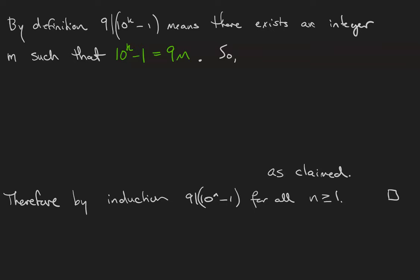So what that means is that 10 to the k plus 1 minus 1 can be written as 10 times 10 to the k by the laws of exponents minus 1. And since 10 can be split into 9 plus 1, we're going to do exactly that, the reasons for which will become clear momentarily.